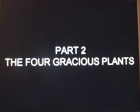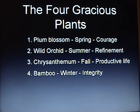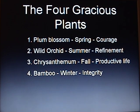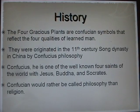Part 2: The Four Gracious Plants. Plum Blossom stands for spring and courage. Wild Orchid stands for summer and refinement. Chrysanthemum stands for fall and productive life. Bamboo stands for winter and integrity. The Four Gracious Plants are Confucian symbols that reflect the four qualities of a loved man, originating in the 11th century Song Dynasty in China through Confucian philosophy.